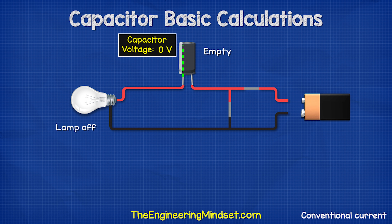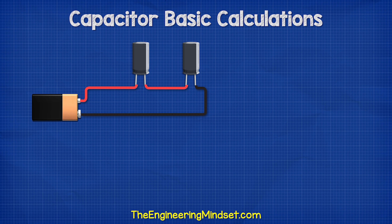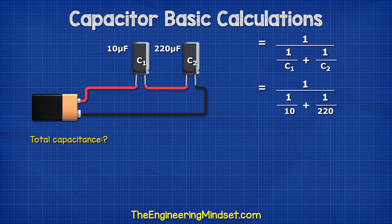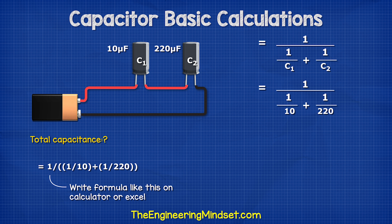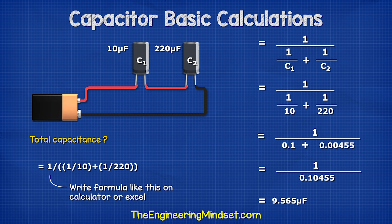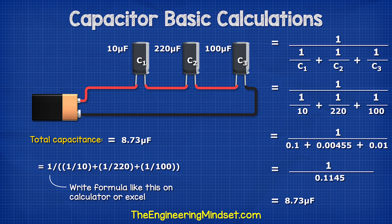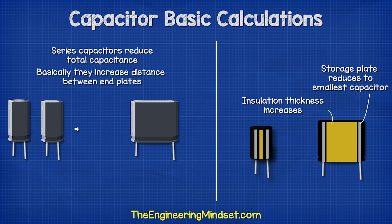What if we had two capacitors connected in series? Capacitor one is 10 microfarads and capacitor two is 220 microfarads. To find the total capacitance we use a specific formula. All we need to do is input our capacitor values of 10 and 220 microfarads — we can type it into our calculator or Excel — which gives a total of 9.56 microfarads. Notice the total capacitance is now smaller than the lowest value capacitor. Adding a third capacitor of 100 microfarads gives a total capacitance of 8.73 microfarads, which is even less. That's because combining them in series essentially increases the thickness of the insulating material.